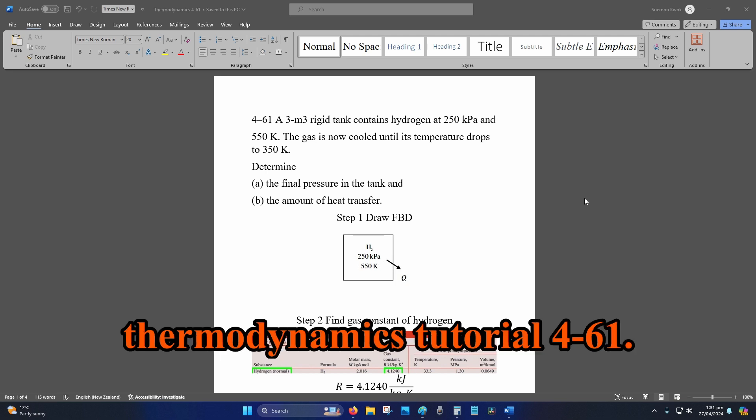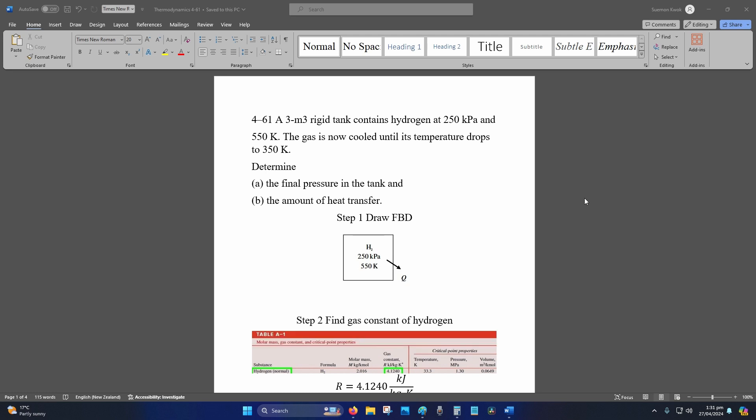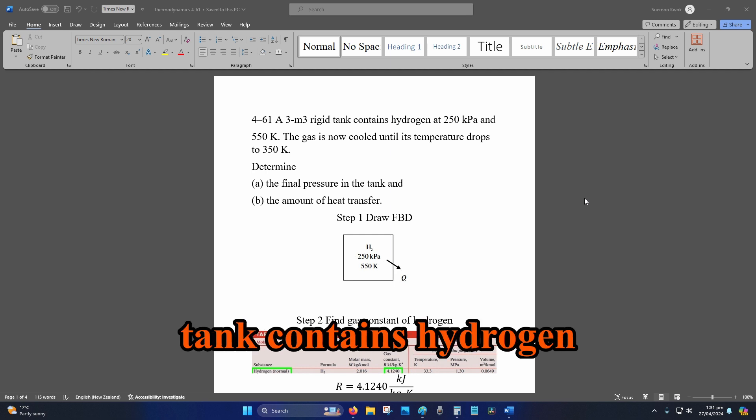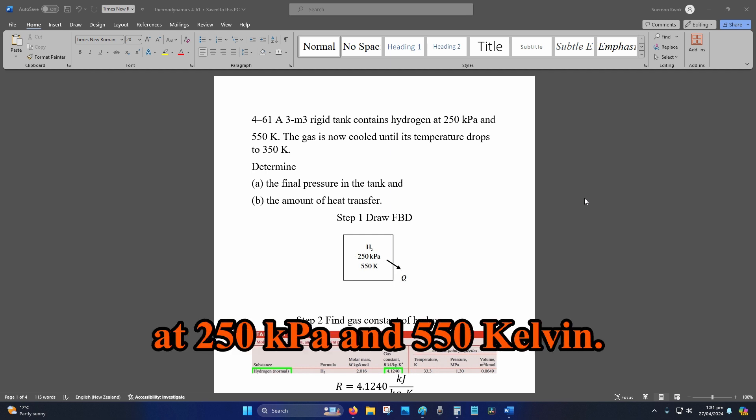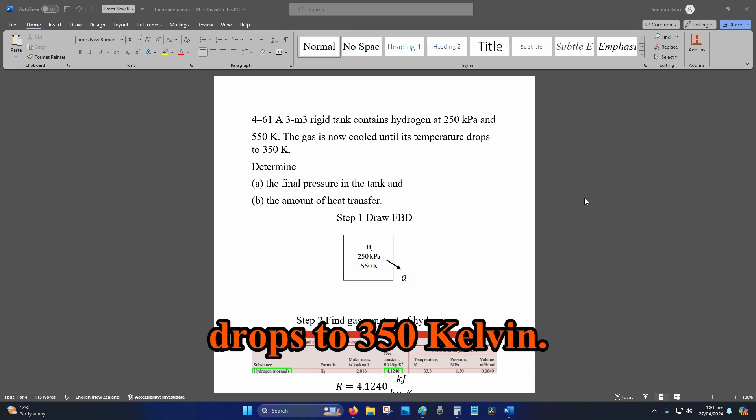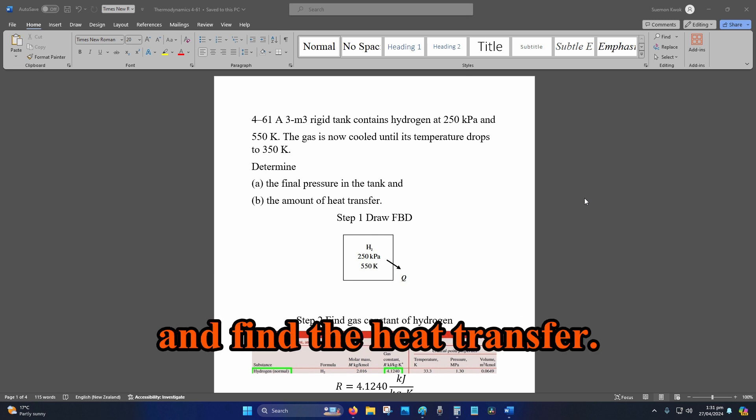Hey internet, welcome to Thermodynamics Tutorial 4-61. A 3 cubic meter rigid tank contains hydrogen at 250 kPa and 550 Kelvin. The gas is cooled until the temperature drops to 350 Kelvin. Find the final temperature in the tank and find the heat transfer.